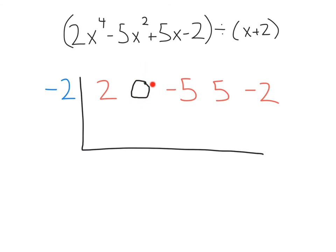This zero coefficient goes for the x cubed term. Notice up here we go straight from x to the fourth to x squared — there is no x cubed term. Since there's no x cubed term, we put a coefficient of zero to represent that place as a placeholder. Then from there, we can continue with synthetic division.